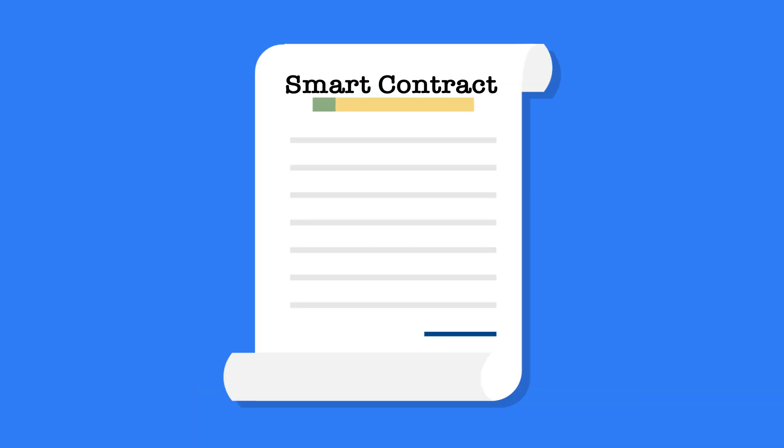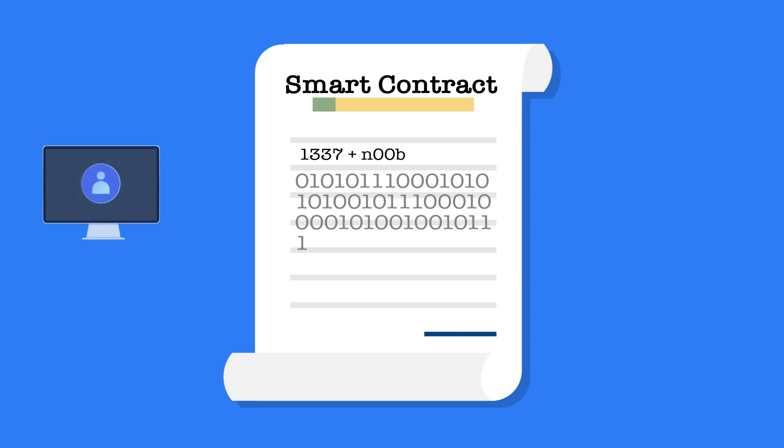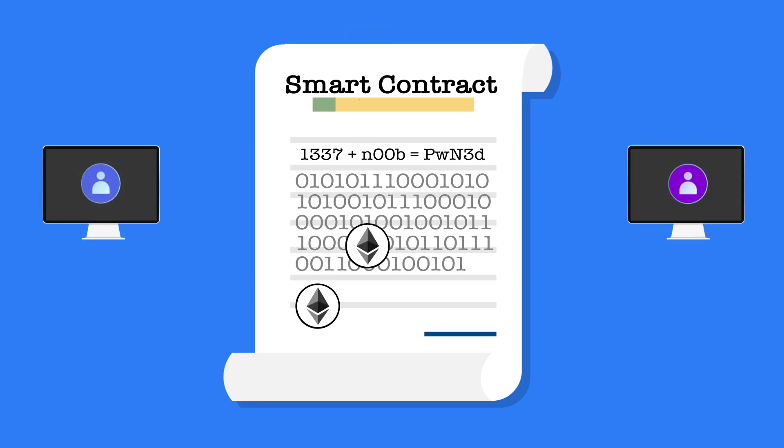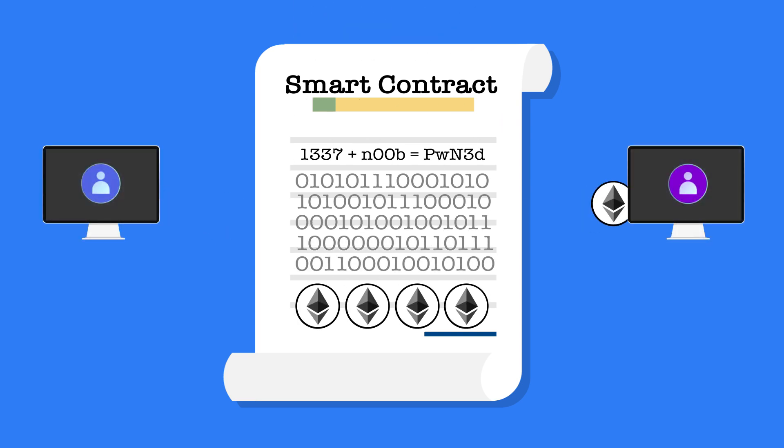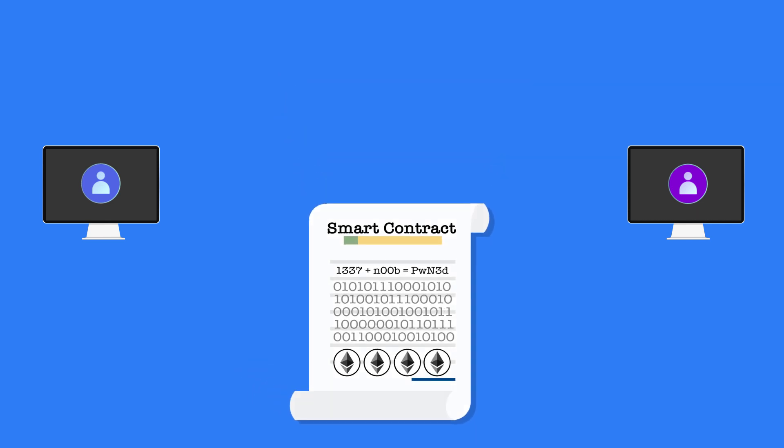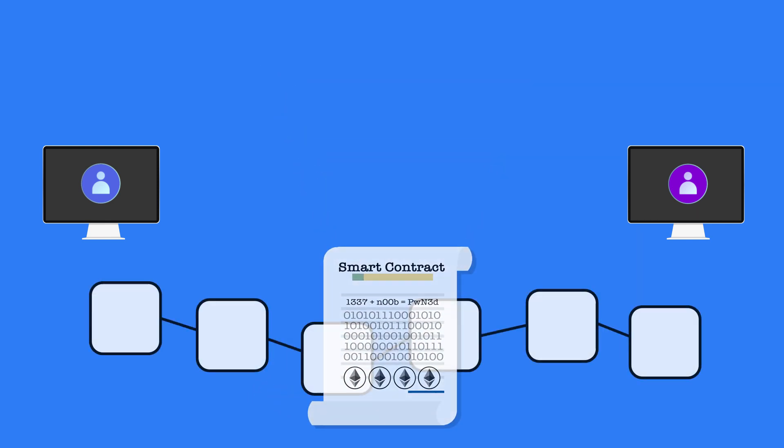Smart contracts are digital mathematical agreements between two parties that will automatically execute when the parameters are met. The code is written into the contract and executed on the blockchain. Once the smart contract is deployed, you can't make changes anymore. This technology proves to be reliable because it eliminates the need for trust in people. Instead, we can trust the numbers and the programming.